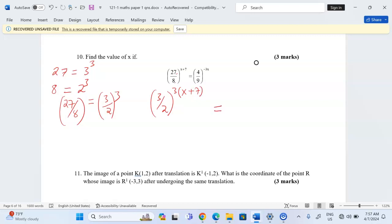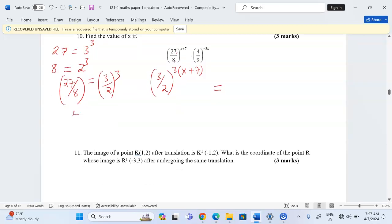To the right hand side, let's deal with 4 and 9. When you look at 4, 4 can be put to base 2, which is 2 power 2. And 9 can be put to base 3, which is 3 squared.